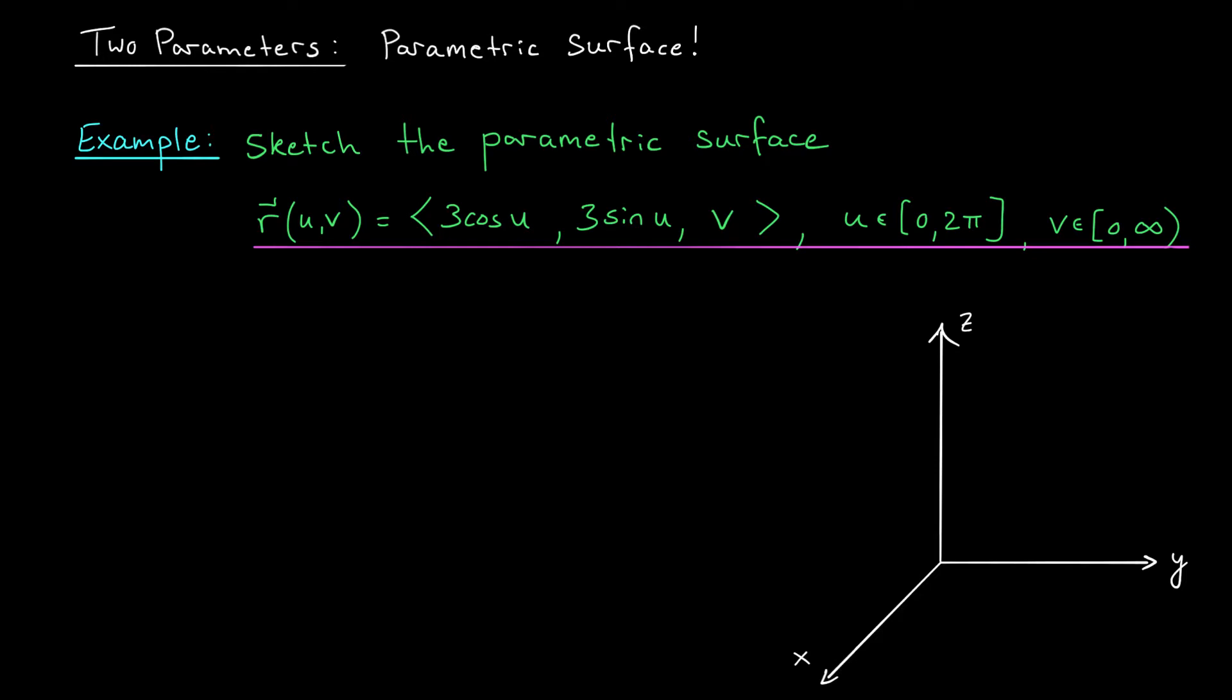Okay, I'm not sure how to handle this with two parameters. So I'm going to fix V as a constant. I'm going to see what happens when I let V be a constant and I let U range over all of its possible values. So maybe we'll set V equal to 0. That will give us the equation R of U, 0 equals 3 cos U, 3 sine U, 0.